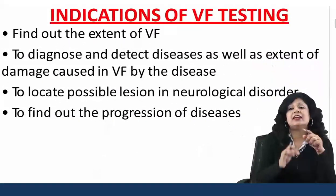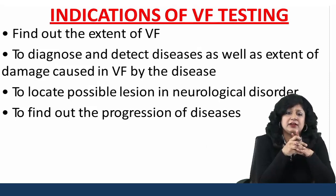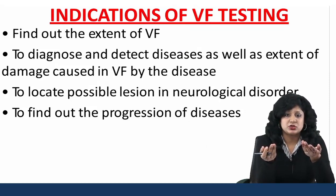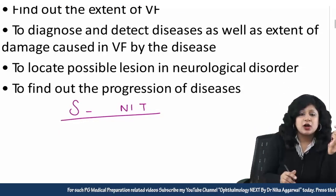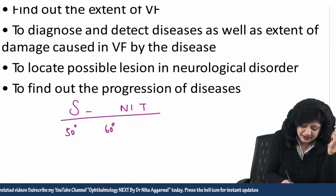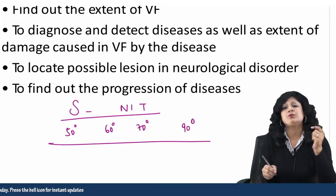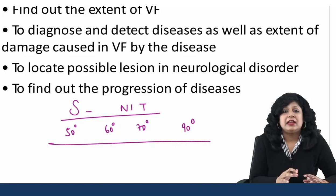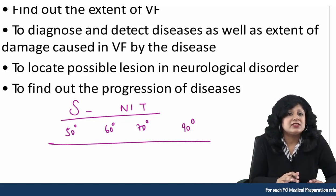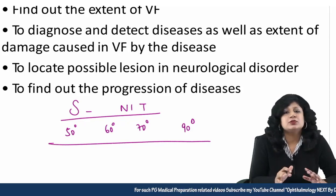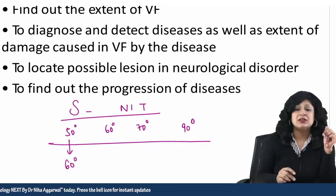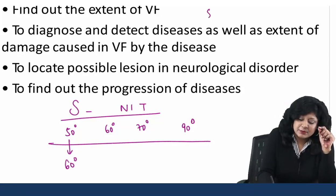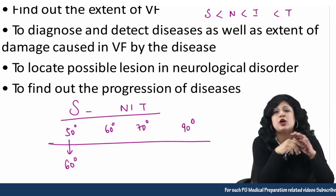Now, let us see the indications of visual field testing. First, if I want to know the extent of the visual field in the patient — what is normal? Normal is actually SNET: starting with 50 degrees superior, then 60 degrees nasal, 70 degrees inferior, and 90 degrees temporal. These values are from Parsons — though slight variations exist in different books, especially for the temporal field. Minimum is superior, then nasal, then inferior, then temporal — that is why it is better to adopt 50 degrees for superior.